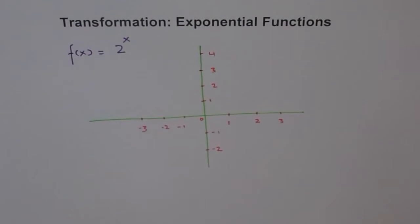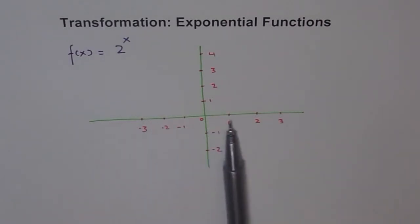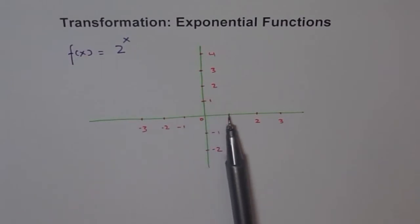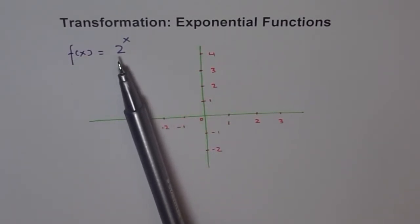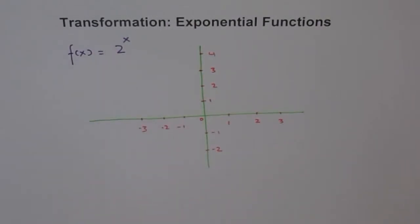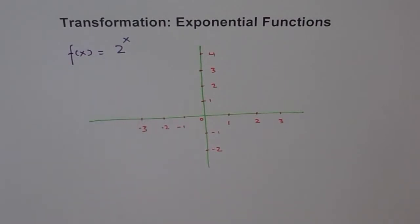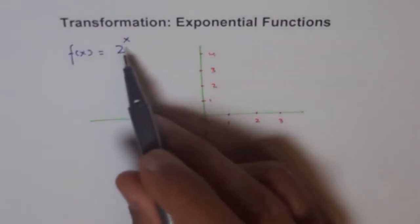In exponential functions, some important characteristics to keep in mind: first, it has a horizontal asymptote which is the x-axis. Second, if x = 0 then f(x) is always equal to 1. If x = 1 then f(x) equals the base of the function. And if x = -1, it is the reciprocal of the base. By plugging in values we can get our graph, as we've seen earlier with the base function.